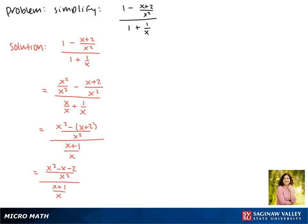So that it's easier to cancel out factors, before we do anything else, we're going to factor this trinomial in the numerator. The factors of negative 2 that make negative 1 are positive 1 and negative 2. So we get x plus 1 times x minus 2 over x squared divided by x plus 1 over x.